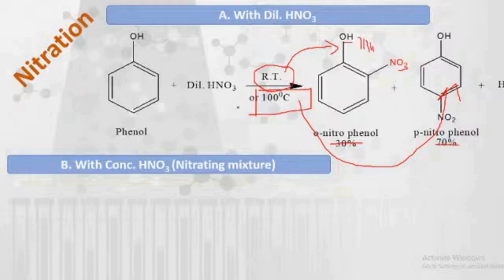If the reaction takes place at 100°C or above, paranitrophenol is obtained as the major product. This is because at this higher temperature, hydrogen bonding cannot be sustained, and therefore ortho product formation cannot take place. So paranitrophenol is the major product at 100°C.